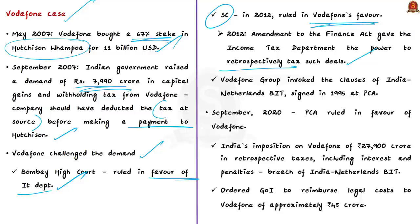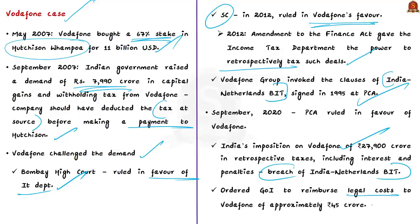Vodafone invoked clauses of the bilateral investment treaty signed between India and the Netherlands in 1995 at the Permanent Court of Arbitration, because it was the Dutch affiliate of Vodafone Group that had bought the stake in Hutchison Wampoa. In September 2020, the PCA ruled against India, finding that India's imposition of retrospective taxes including interest and penalties was in breach of the India-Netherlands bilateral investment treaty. The court ordered the Government of India to reimburse legal costs to Vodafone, approximately 45 crore rupees.